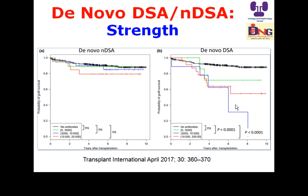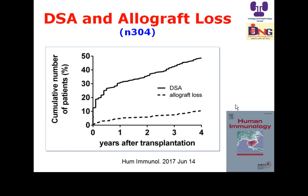The presence of anti-HLA antibodies even after transplantation carries clinical significance. A study of 304 patients showed donor-specific antibody detection and graft loss after renal transplantation: the rate of graft loss was 1.60% per year, and the incidence of anti-HLA antibodies was 4.8% per year.